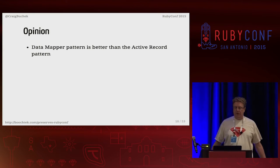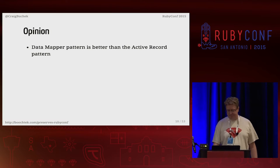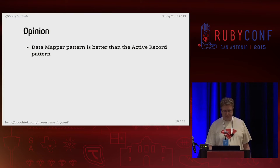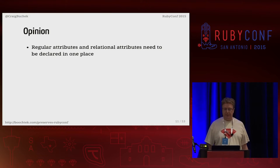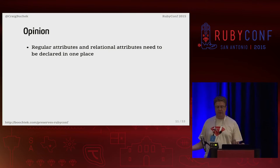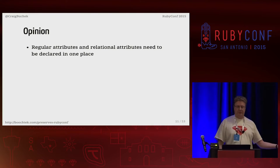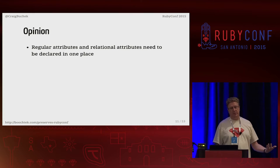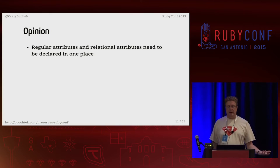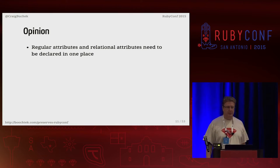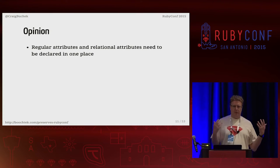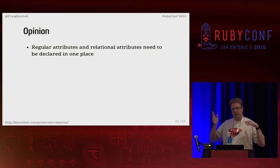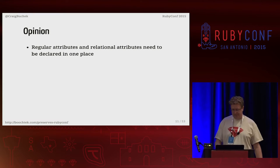I started designing the ORM based on a few strong opinions. The thing that drives me most crazy about ActiveRecord is having to look in two places. The relationships are defined in the model class — like has_many and belongs_to — and the attributes are defined in the database schema. I always hate having to look in two different places when trying to figure out how a model works.